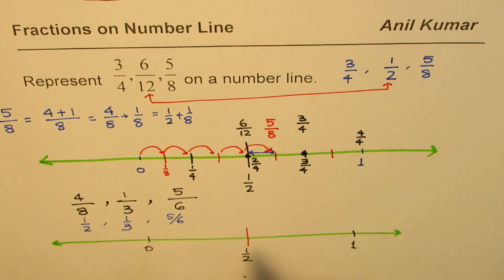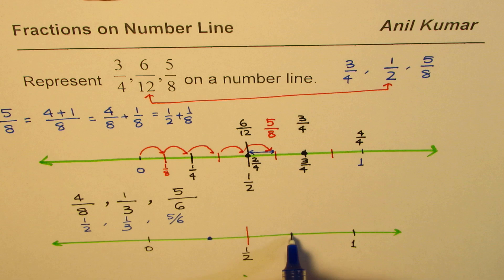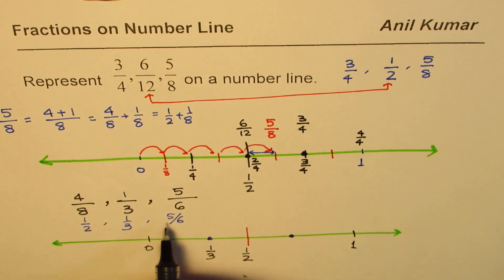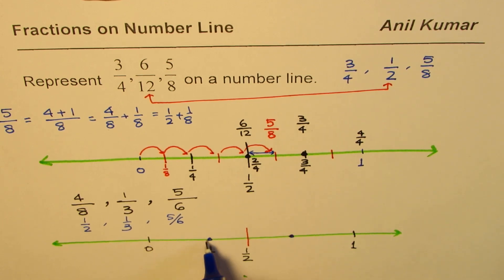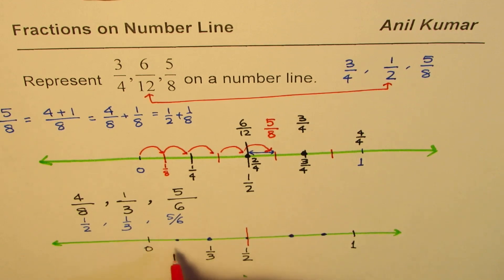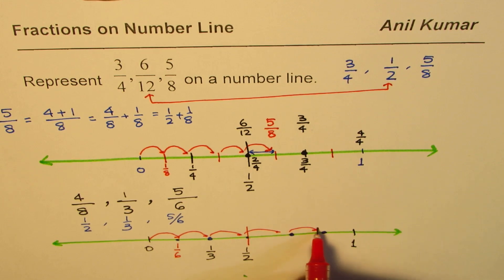For 1/3, divide into 3 equal parts. The first mark is 1/3. For 5/6, divide each third into halves — that gives you sixths. So each portion is 1/6. We are looking for 5/6, so count 1, 2, 3, 4, and 5.